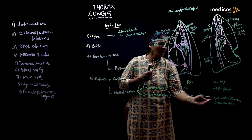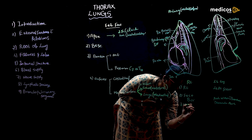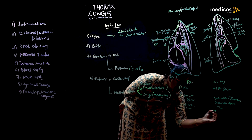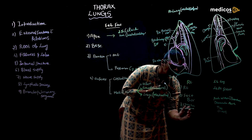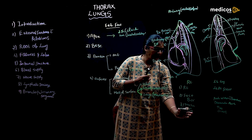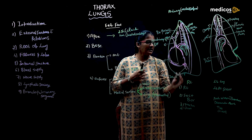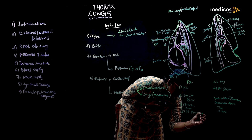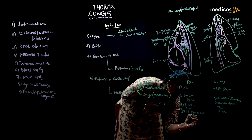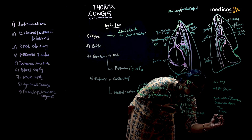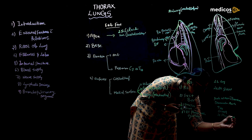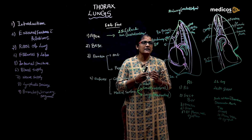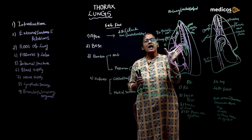Both the right and left lungs are related to the trachea and esophagus. For nerve structures: the right lung is related to the right phrenic nerve, right vagus nerve, and right sympathetic chain; the left lung is related to the left phrenic nerve, left vagus nerve, and left sympathetic chain.